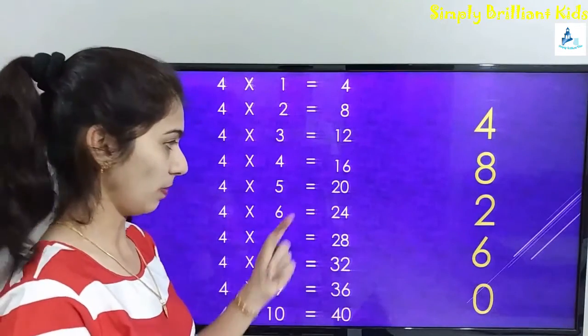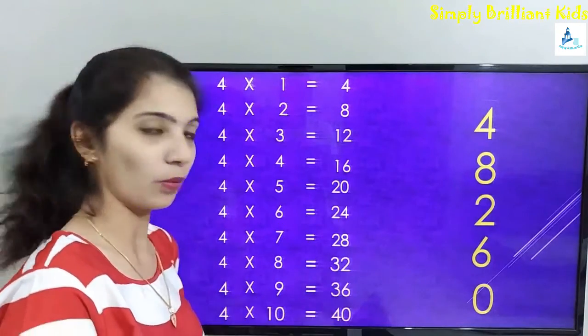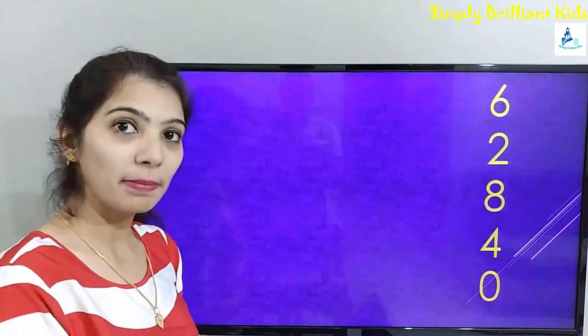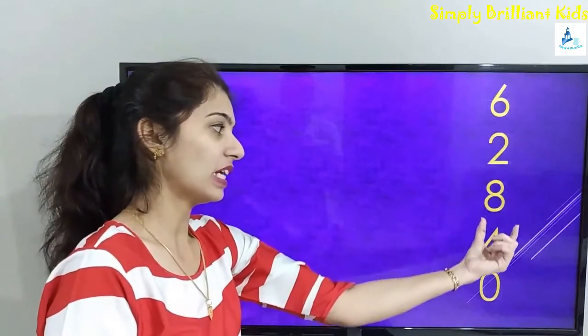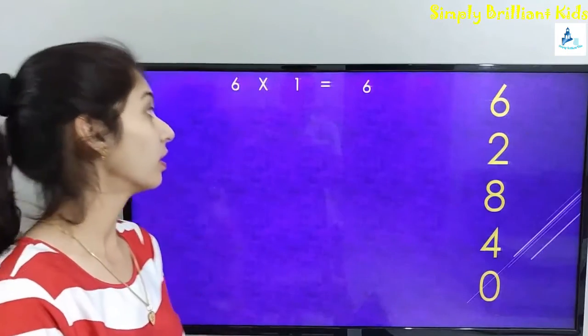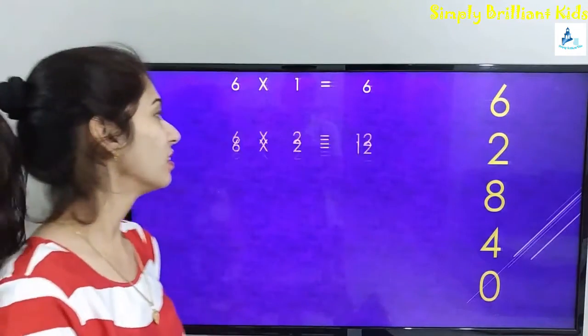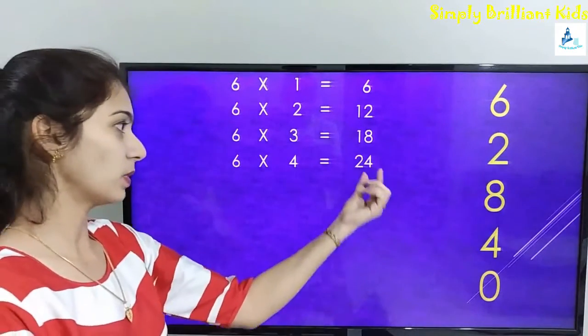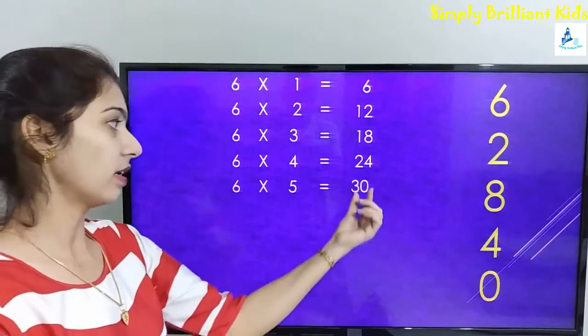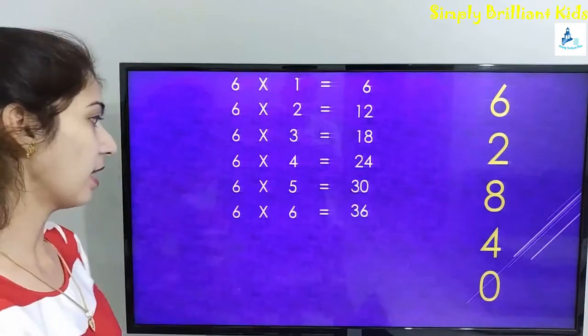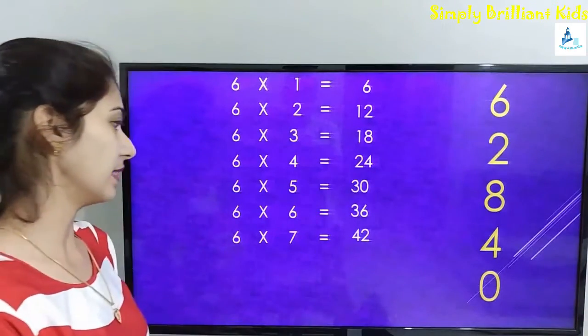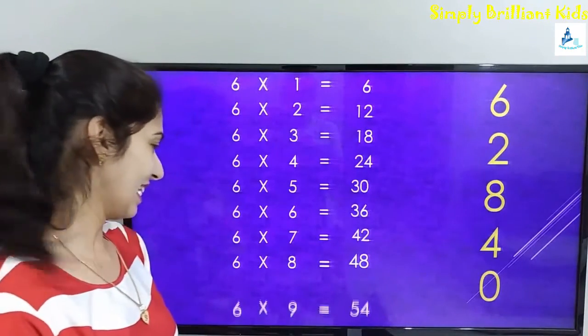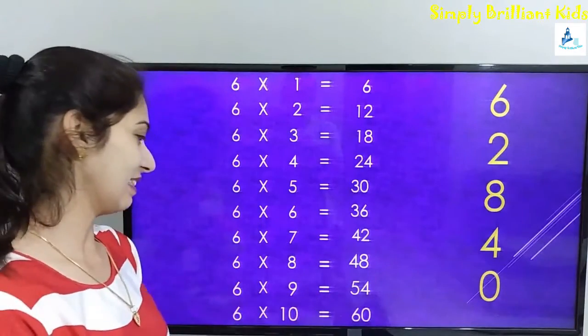Now let's learn six times table. Remember the series: 6, 2, 8, 4, 0. Six ones are six, six twos are twelve, six threes are eighteen, six fours are twenty-four, six fives are thirty, six sixes are thirty-six, six sevens are forty-two, six eights are forty-eight, six nines are fifty-four, six tens are sixty. So remember the series: 6, 2, 8, 4, 0 to learn six times table.